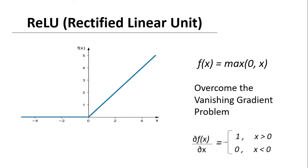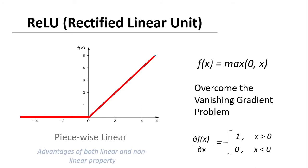ReLU's derivative value is 1, which was the maximum value of the tanh derivative, so learning can also be very fast. Also note that ReLU is not entirely linear — it gives 0 for all x less than 0 while giving linear output for x greater than 0, making it a piecewise linear function. This gives it the advantage of both linear and non-linear properties: the linearity helps overcome the vanishing gradient problem and makes training faster, while the non-linearity lets us benefit from using multiple hidden layers in our neural network.